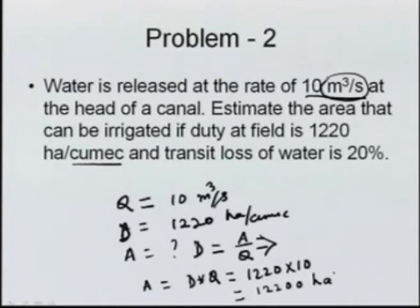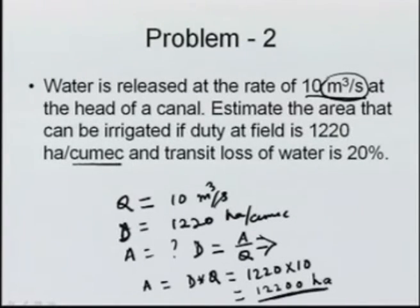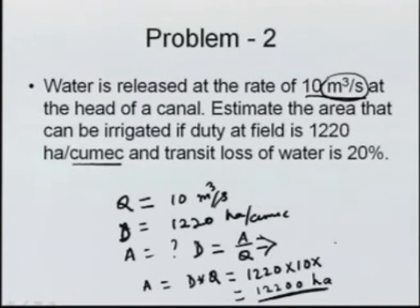There is a transit loss of 20 percent, so we cannot use the full Q of 10 m³/s. The actual Q available to the field is 80 percent of that, since 20 percent is lost. So multiply by a factor of 0.8. The final answer will be 12200 × 0.8, expressed in hectare.